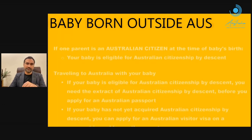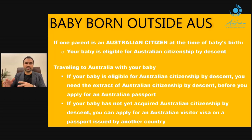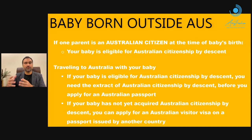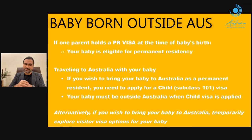If one parent is an Australian citizen at the time of the baby's birth, your baby is eligible for Australian citizenship by descent. If you want to travel to Australia with your baby and your baby is eligible for citizenship by descent, you need the certificate of Australian citizenship by descent before applying for an Australian passport. Until then, if your baby has not yet acquired citizenship by descent, you can apply for an Australian visitor visa on a passport issued by the country where you are currently residing.